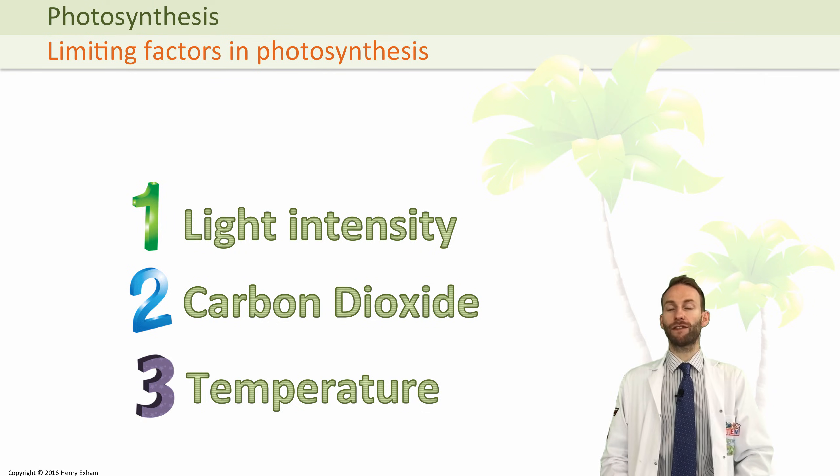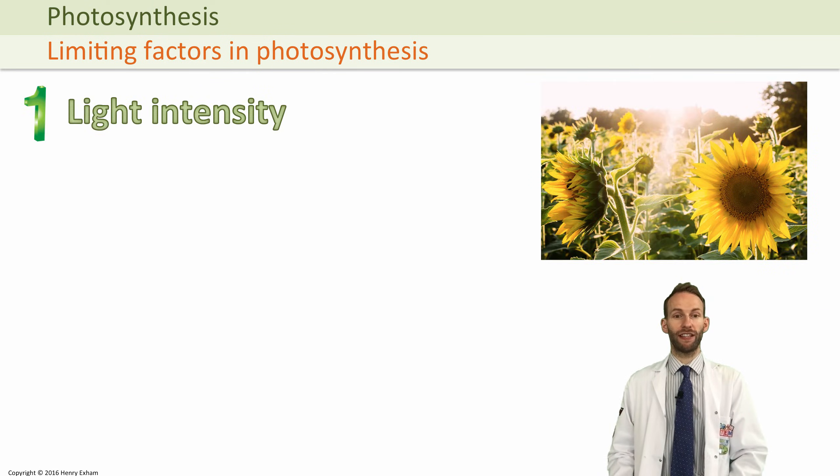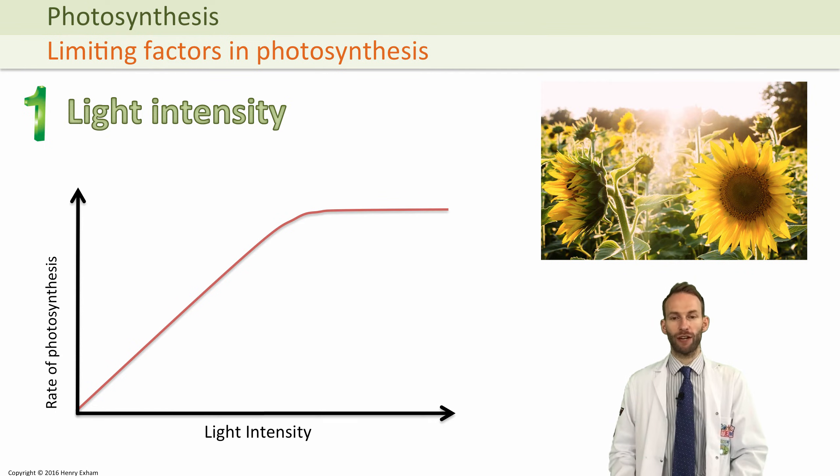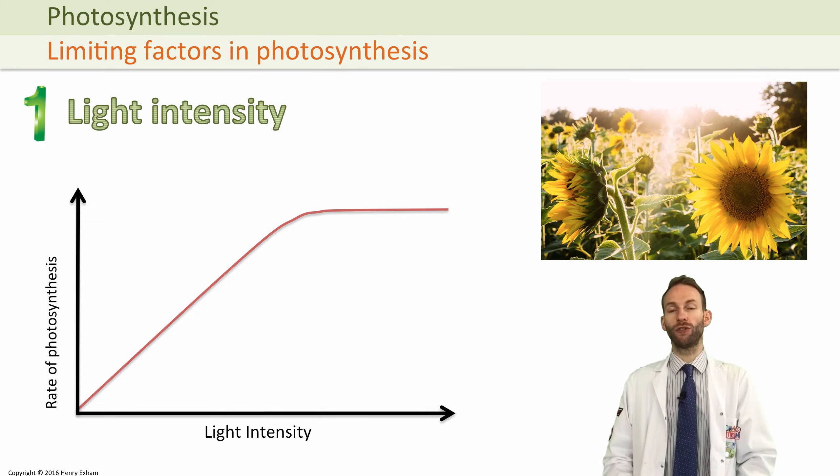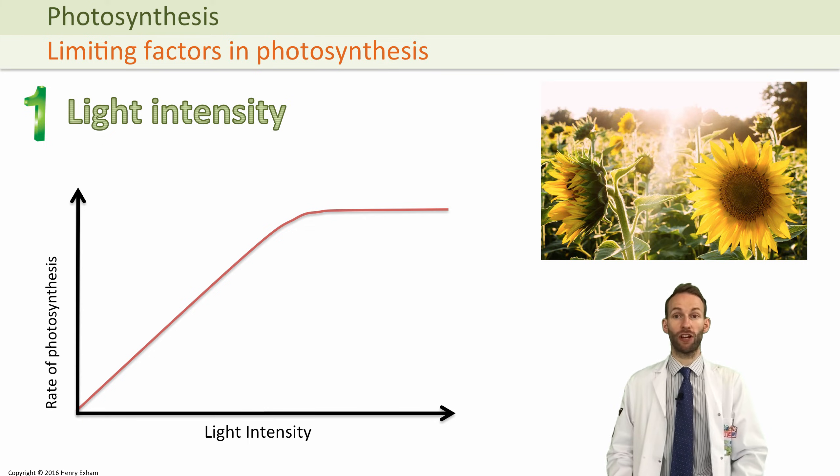The higher the light intensity, the faster the rate of photosynthesis, provided there's lots of carbon dioxide and the temperature is warm enough. But if light intensity drops too low, chlorophyll gets excited less in the light-dependent stage. Therefore, you get less ATP, less NADPH, and less glucose produced in the light-independent stage, which slows down the whole process.